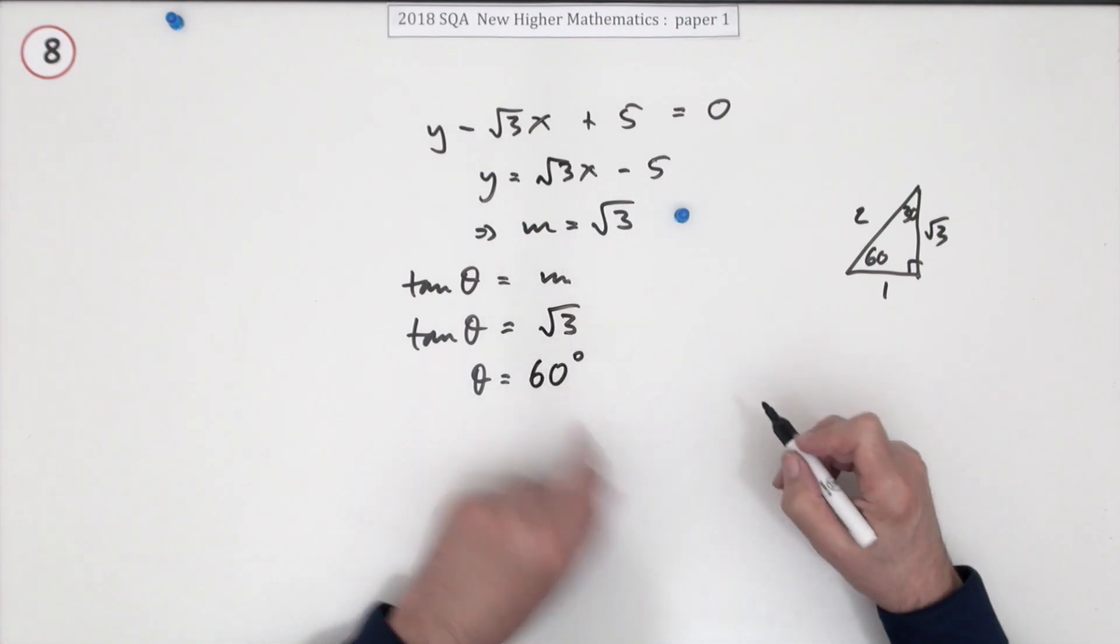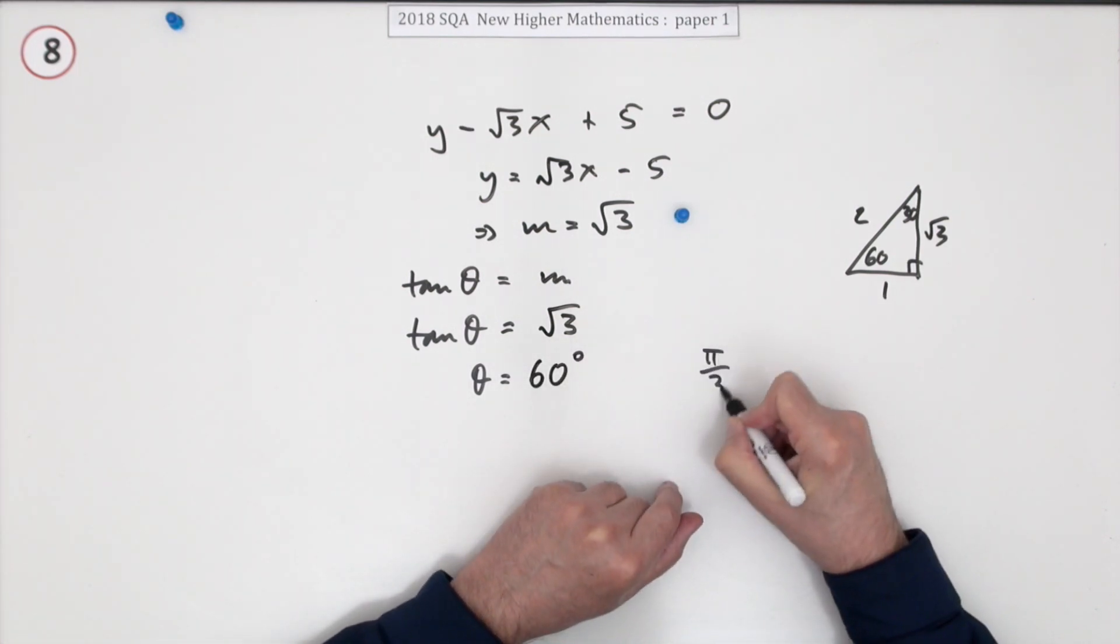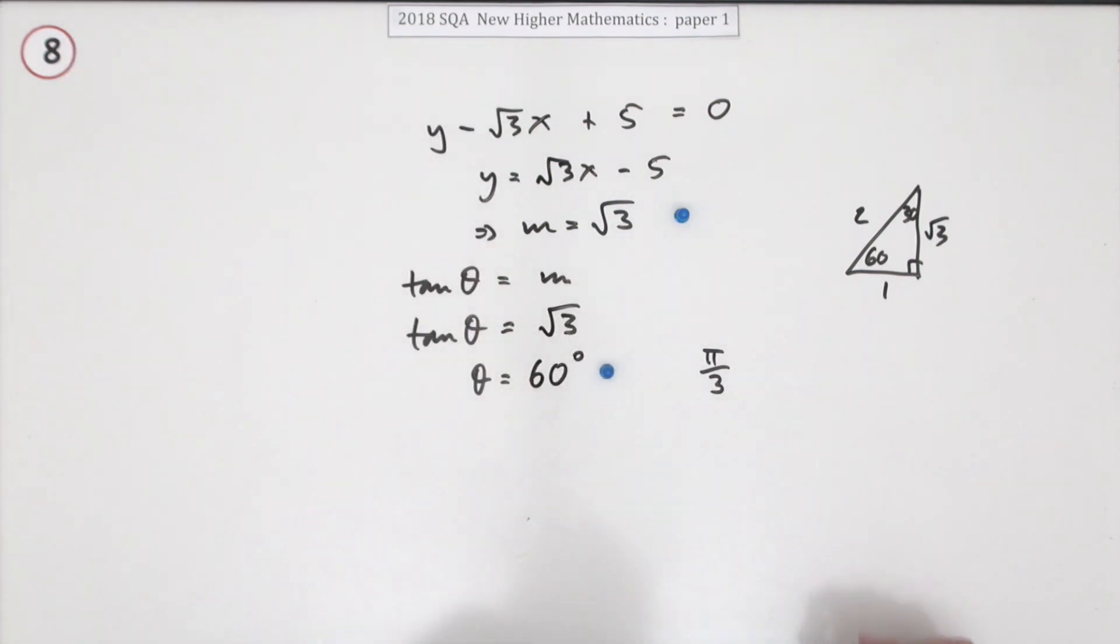Root 3 is opposite the 60, so it's 60 degrees. Unless you wanted to go fancy and put it in radians and write pi upon 3. That's a mark.